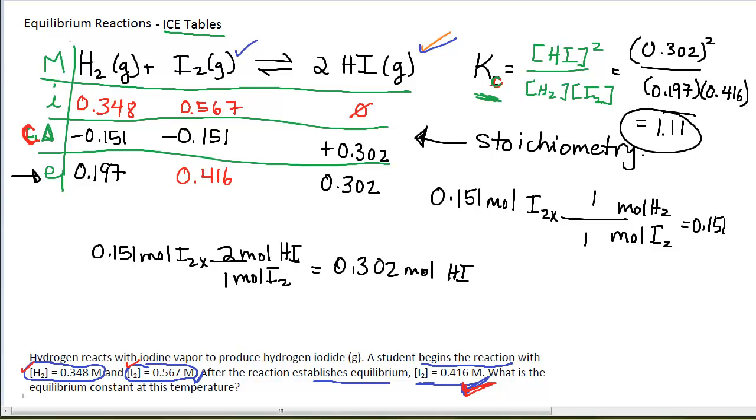This problem gets a little trickier, depending again on how it's asked. But the basics are to use this ICE table to keep track of what's going on in your reaction in order to solve for your equilibrium constant.